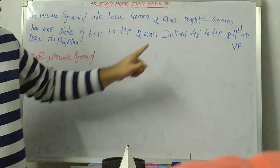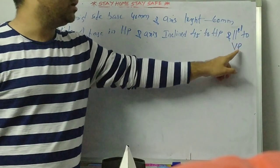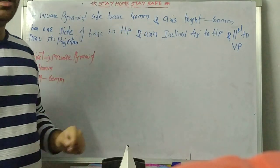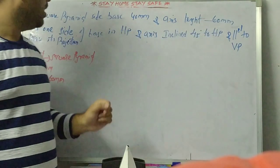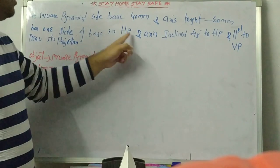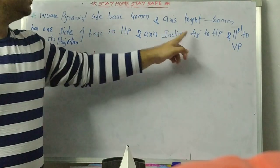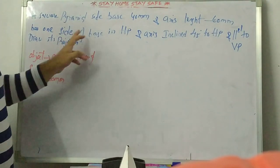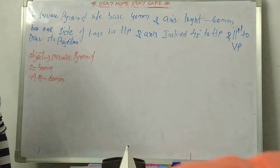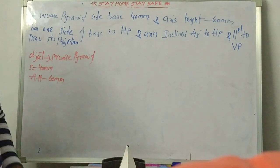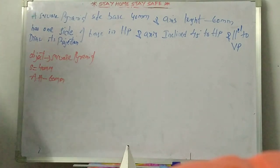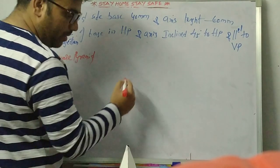The base edge is given in the HP and the axis is inclined 45 degrees to the HP and parallel to the VP. So the square pyramid base is 40mm, axis length is 60mm, the base side is in the HP, and the axis is inclined to the HP.